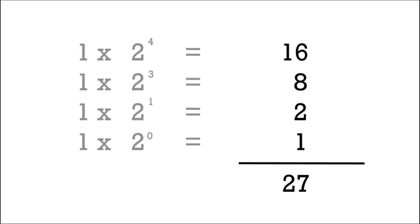So 1 times 2 to the power of 4, 1 times 2 to the power of 3, 1 times 2 to the power of 1, and 1 times 2 to the power of 0. And if you can notice I just omitted the 0 times 2 to the power of stuff just because it's always going to be 0.